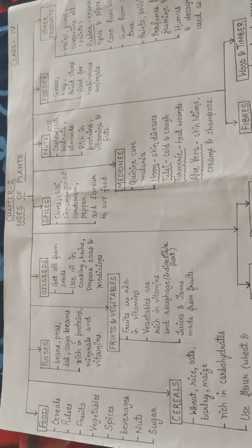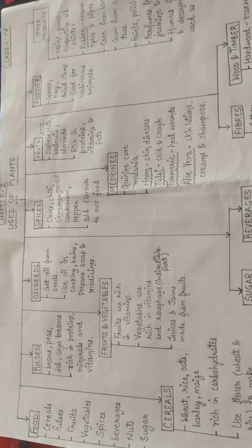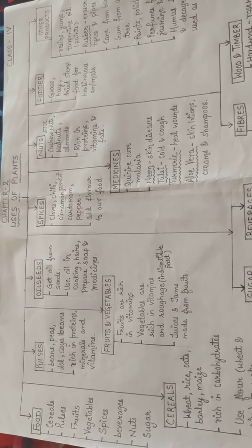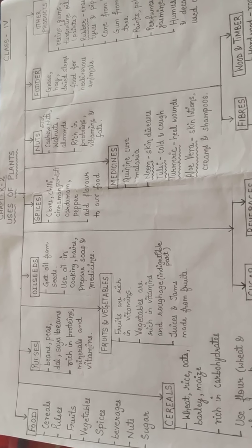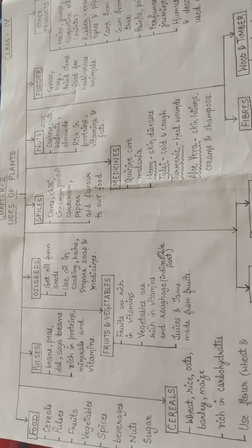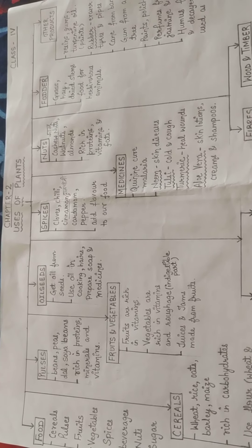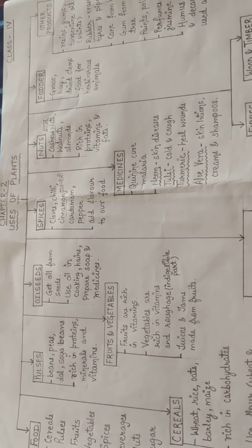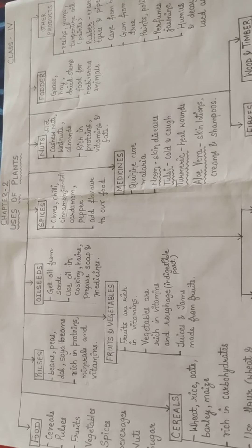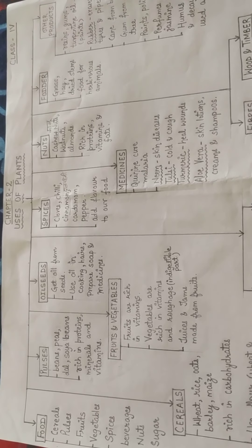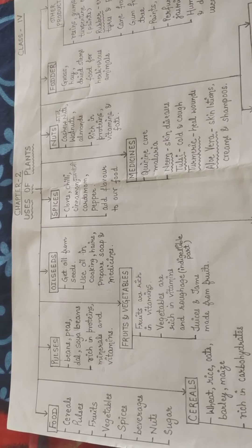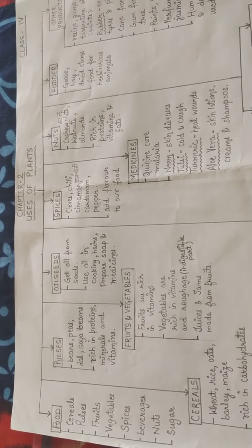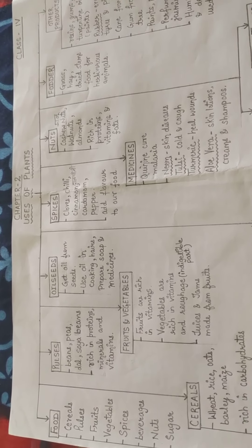Plants provide us with food, oxygen, medicines, wood, and fiber. Plants also give us oxygen to breathe, so in this way they are very useful to us. We will now discuss the various uses of plants one by one.